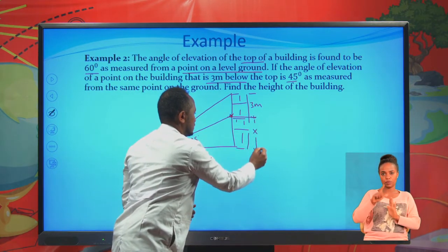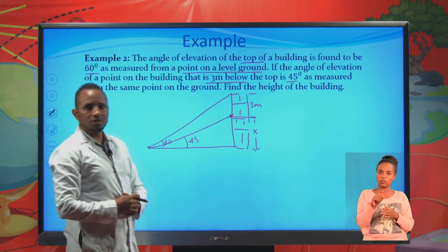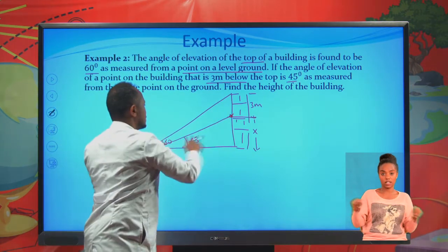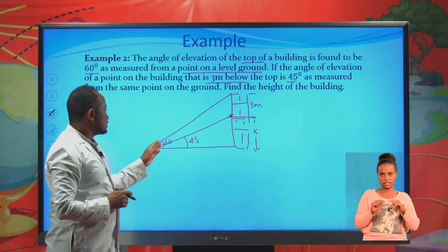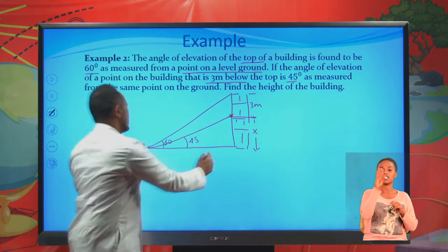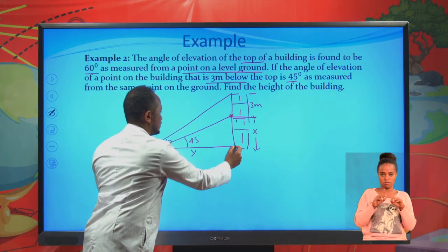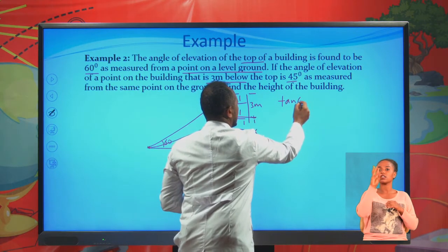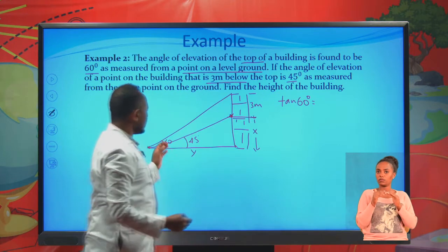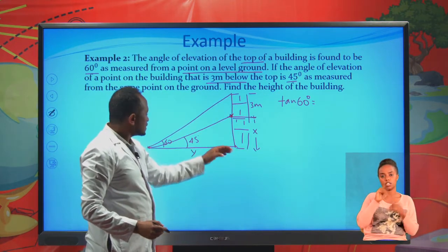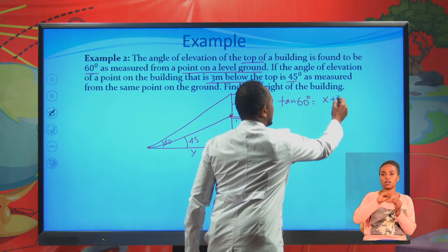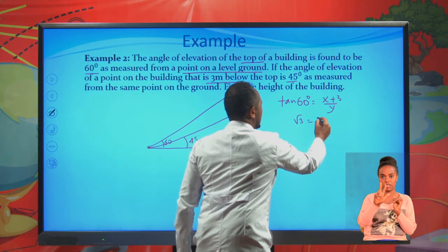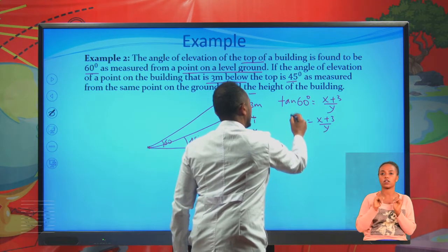Assume the distance from the bottom of the building to the point 3 meters below the top is x, so the total height is 3 plus x. Let y be the horizontal distance from the observer to the building. Using the bigger triangle, tan 60 degrees equals x plus 3 divided by y, which gives the square root of 3 equals x plus 3 over y. This is our first equation.